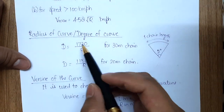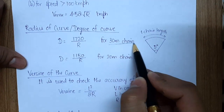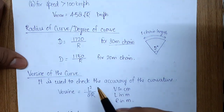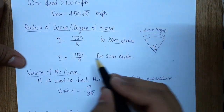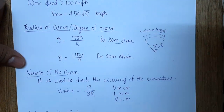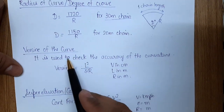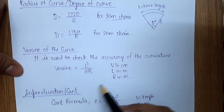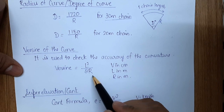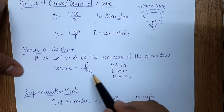For radius or degree of curve: using a 30 m chain, degree of curve = 1720/R; using a 20 m chain, degree = 1150/R, where R is the radius in meters. The versine (word sign) of the curve, used to check accuracy of curvature, is given by l²/(8R), where l is in meters, versine is in centimeters, and R is in meters. Direct questions on versine are commonly asked.